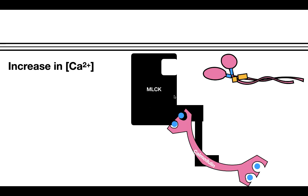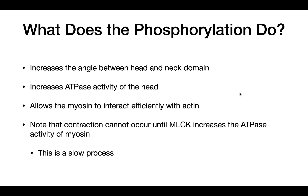MLCK is going to use ATP in order to phosphorylate the regulatory light chains on myosin. When these are phosphorylated, this causes a number of effects: first, it increases the angle between the head and neck domain; second, and most importantly, it increases the ATPase activity of the head — this is what allows contraction to occur in smooth muscle cells; and third, it allows myosin to efficiently interact with actin. Contraction in smooth muscle cells cannot occur until MLCK increases the ATPase activity of myosin, and this whole process is a slow process.